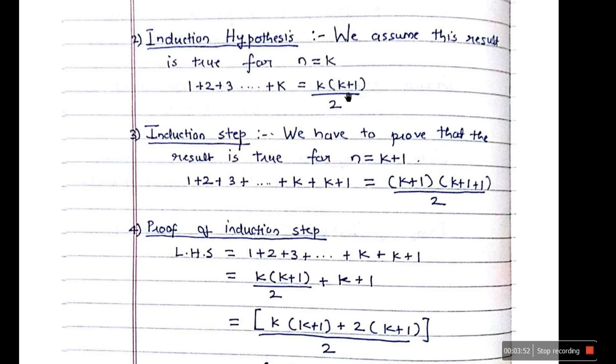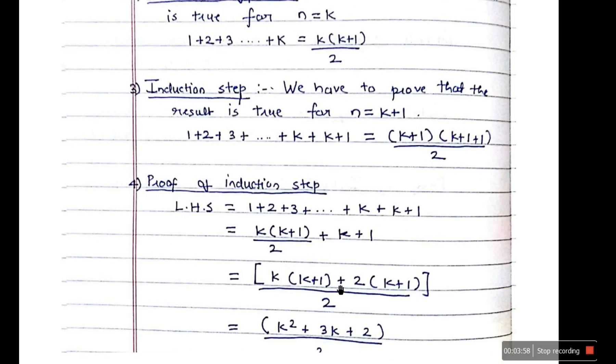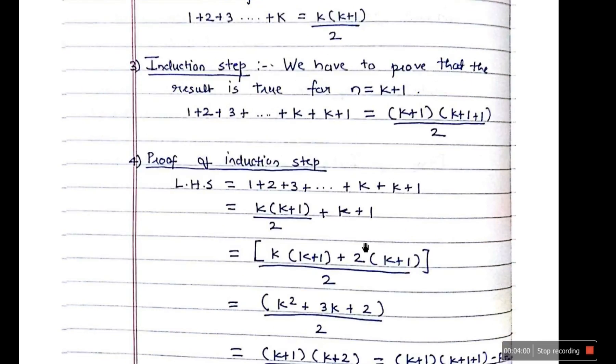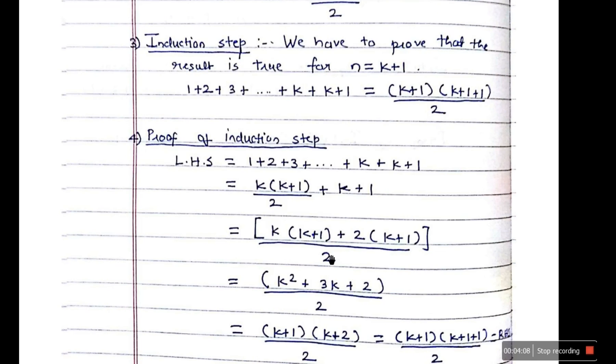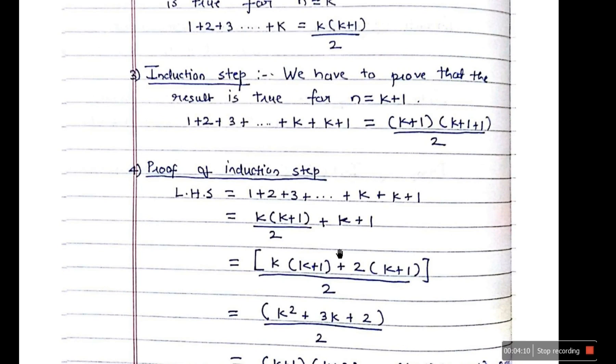What is it? k into k plus 1 divided by 2. So we take that plus k plus 1. So now this equation has become small. Now we just have to simplify it. So what do we do? We just multiply this 2 over here and we make one simple equation over here. Now we will get k into k plus 1, that is this part, plus 2 into k plus 1 divided by 2.